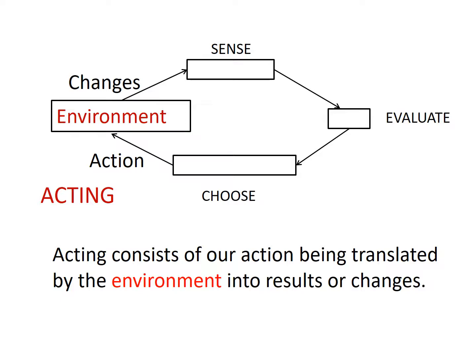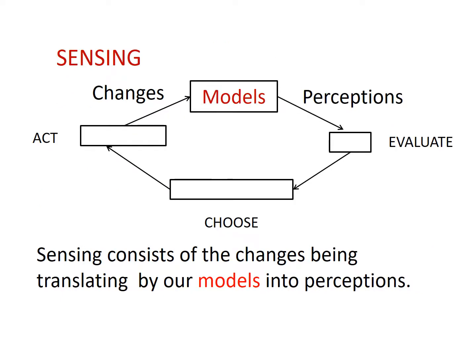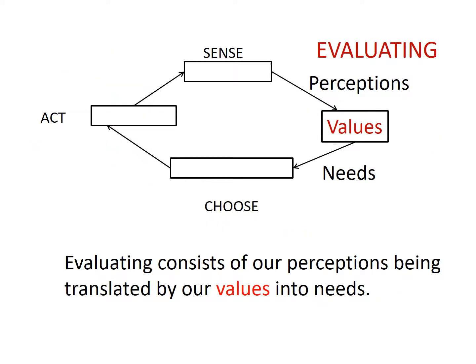Acting, as an information process, consists of our action being translated by the environment into changes or results. Sensing is an information process that consists of those changes being translated by our models into perceptions.